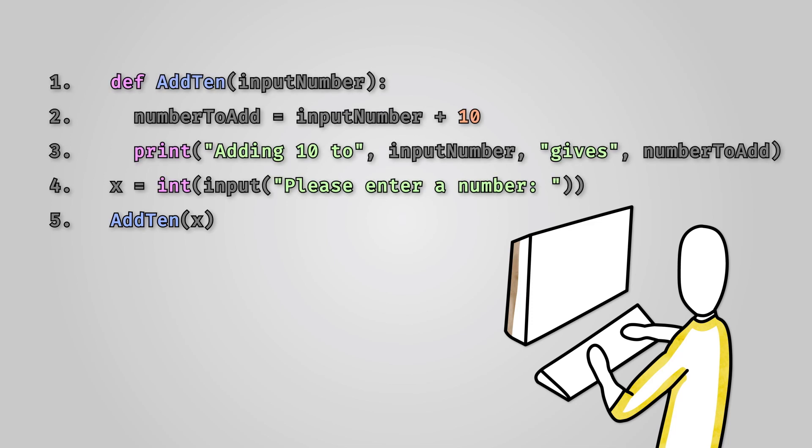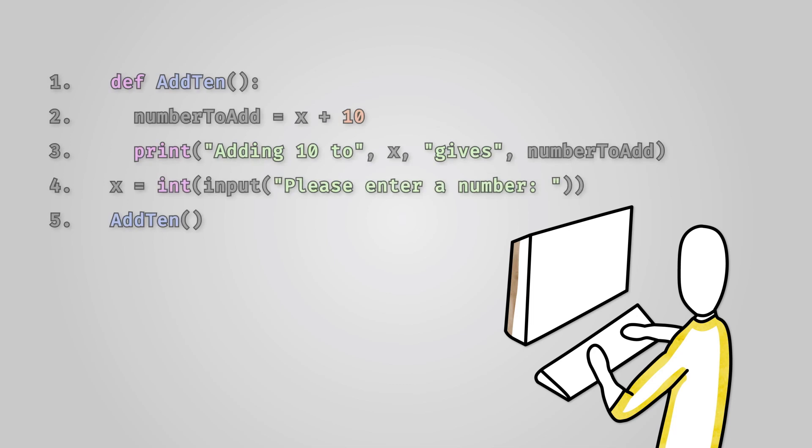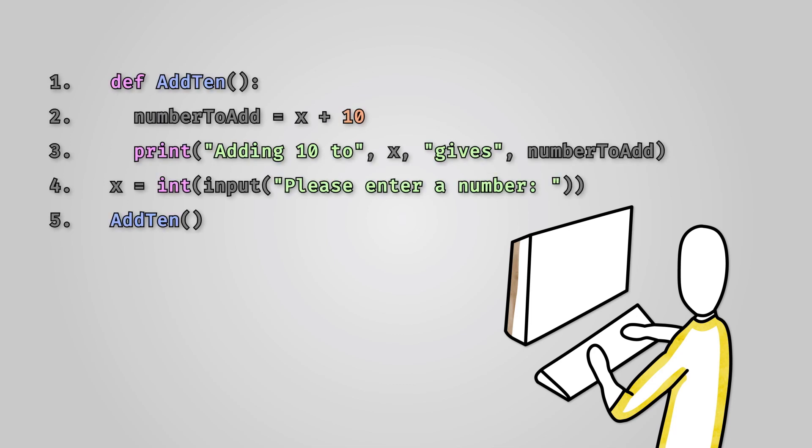However, because the x variable is global we could technically write this code without using a parameter. You can see that as x is a global variable we are able to access it directly within the procedure without ever passing it via a parameter.